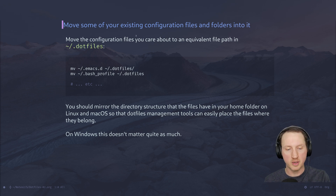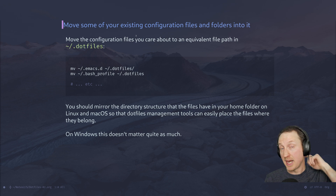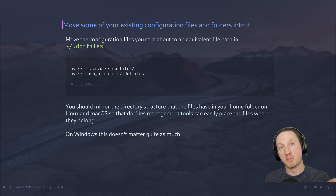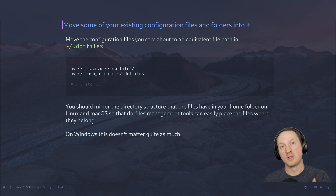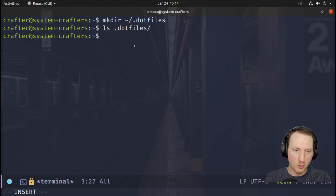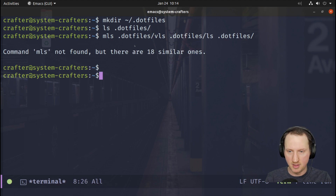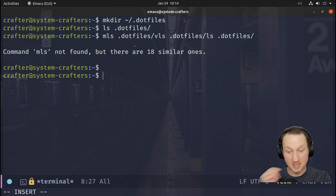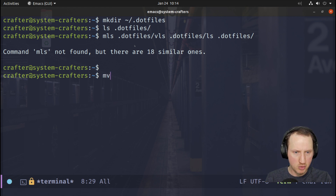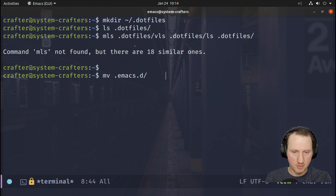One tip: try to mirror the structure of your home directory as much as possible when moving files into your dot files repo, because it will make it easier for tools like GNU Stow to replicate that structure back into your home folder. We're going to use `mv` because we actually do want to move these original files.